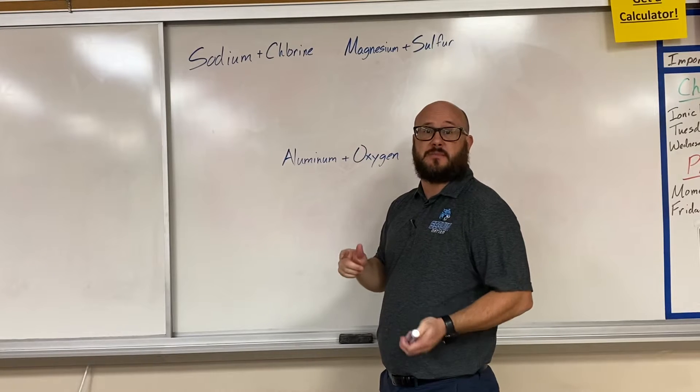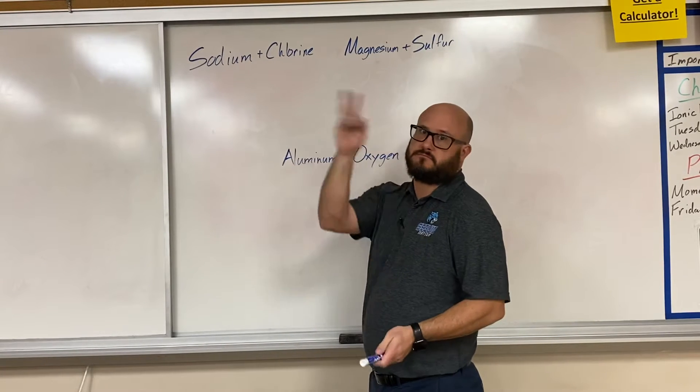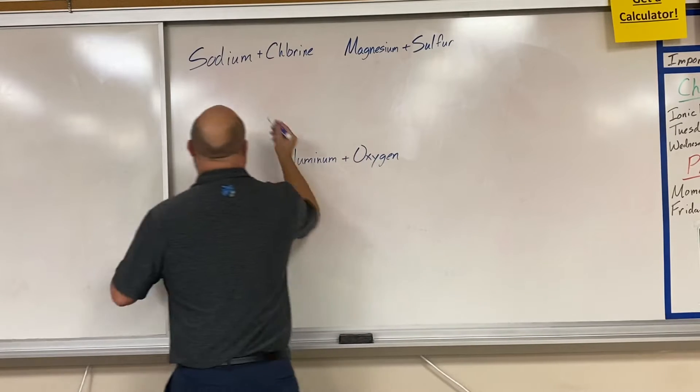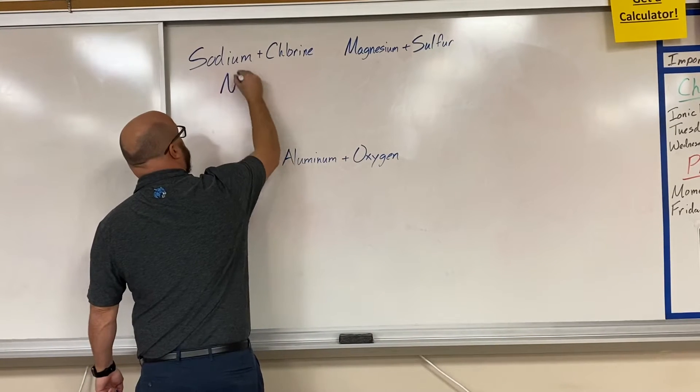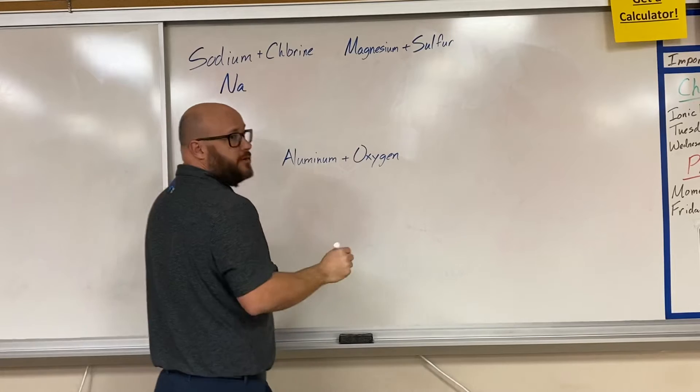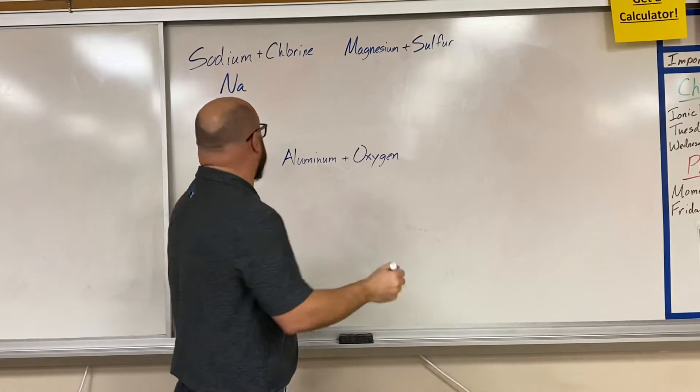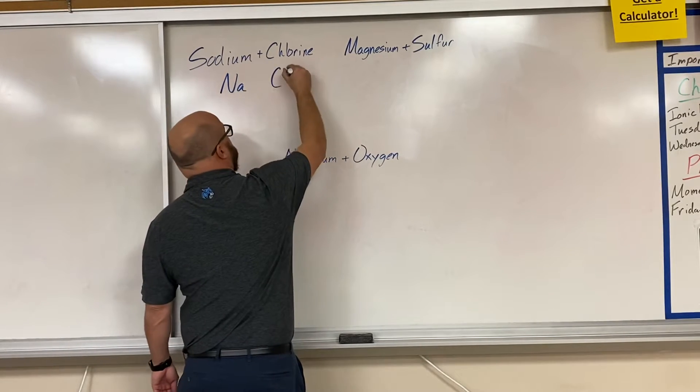Find the element symbol for each. Sodium, on the left-hand side, symbol is Na. Chlorine, over on the nonmetal side, symbol is Cl.